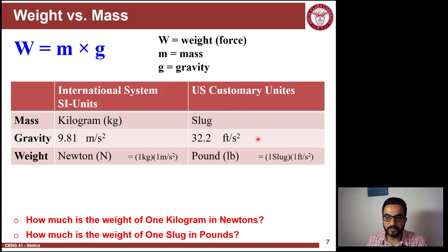Mass is kilograms in the international system and slug in the U.S. system. Gravitational acceleration is 9.81 meters per second squared in the international system and 32.2 feet per second squared in the U.S. system. Weight is measured in newtons in the international system and pound-force in the U.S. system, which equals one slug times one unit of acceleration.